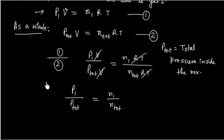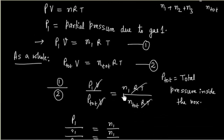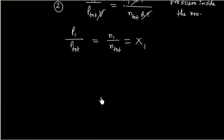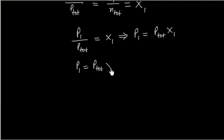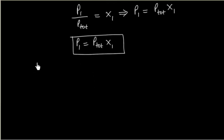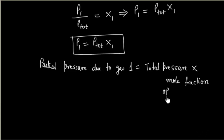And N1 divided by N_total is nothing but the mole fraction of component 1, X1. So we can write P1 divided by P_total equals X1, or P1 equals P_total times X1. This relation is important. The partial pressure due to gas 1 equals the total pressure multiplied by the mole fraction of gas 1.